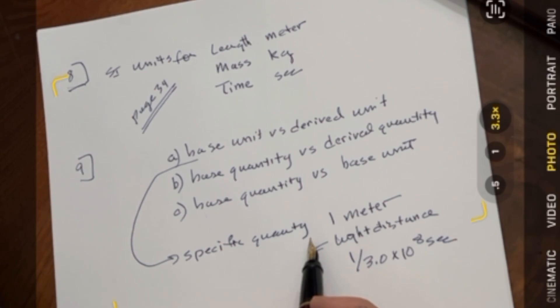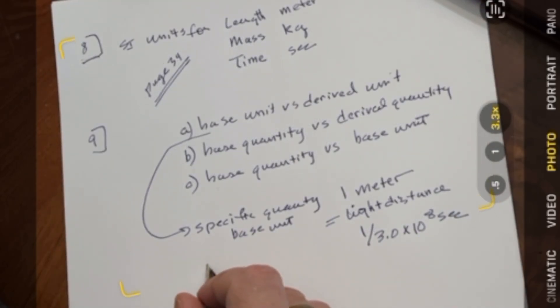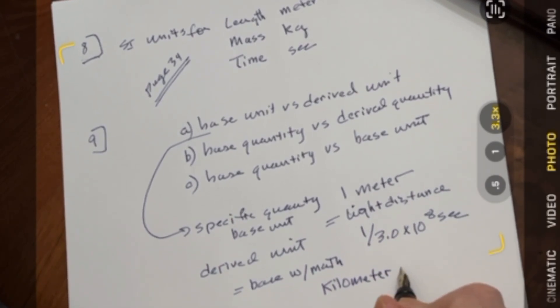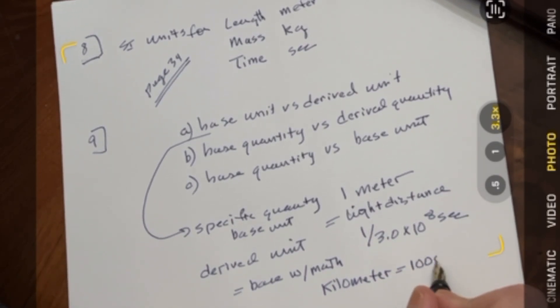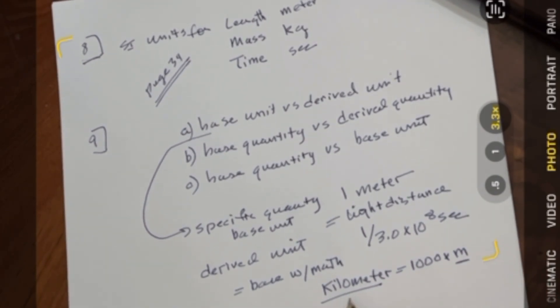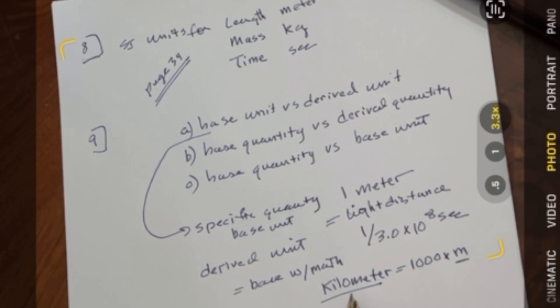A base unit is specifically defined, and an example of a base unit would be a meter. The base unit definition of a meter, at least for our purposes, is the distance that light travels in 1 over 3 times 10 to the 8th seconds. A derived unit equals a base unit with math, basically an algebraic expression of a base unit. A kilometer is defined as 1,000 times a meter. So the base unit is not the kilometer, the meter is. The kilometer is the derived unit.